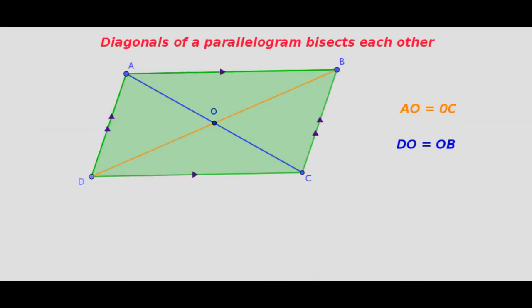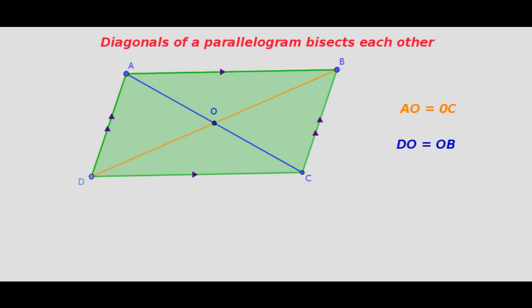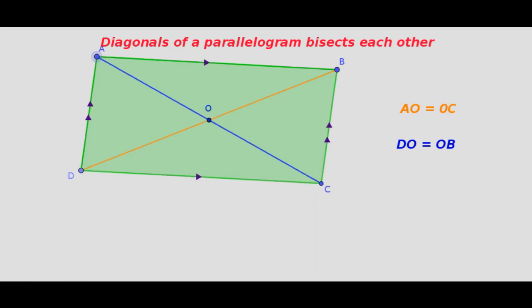Diagonals of a parallelogram bisect each other. Let us visualize this. In parallelogram ABCD, AC and BD are diagonals which intersect at O. We can visualize that AO is equal to OC and DO is equal to OB. We may vary the measurements of the parallelogram and the diagonals still bisect each other.